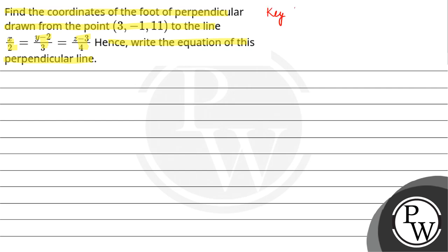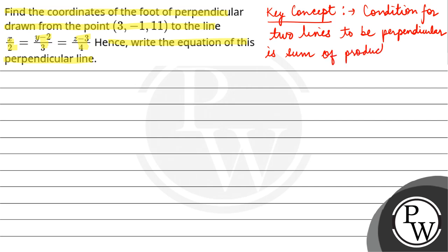So here our key concept is the condition for two lines to be perpendicular is that sum of product of direction ratios is zero.